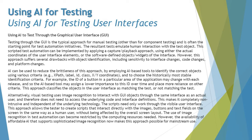AI can be used to reduce the brittleness of this approach by employing AI-based tools to identify the correct objects using various criteria — for example, XPath, label, ID, class, and XY coordinates — and to choose the historically most stable identification criteria. For example, the ID of a button in a particular area of the application may change with each release, so the AI-based tool may assign a lower importance to this ID over time and place more reliance on other criteria. This approach classifies the object in the user interface as matching the test or not. Alternatively, visual testing uses image recognition to interact with GUI objects through the same interface as an actual user, without needing to access the underlying code.